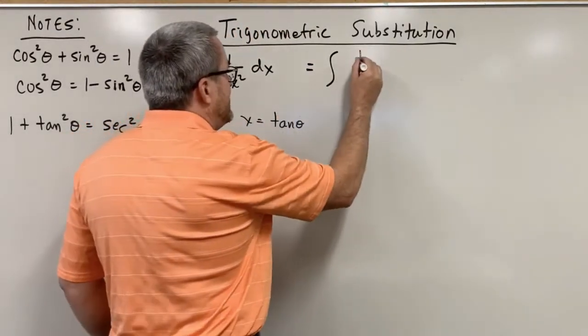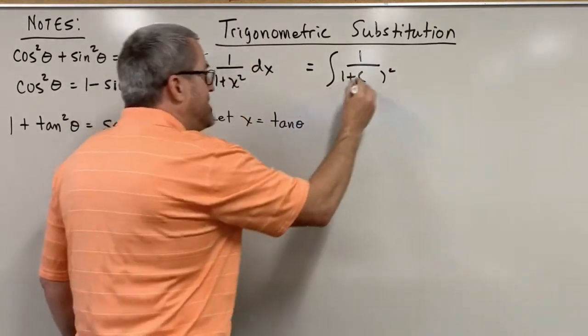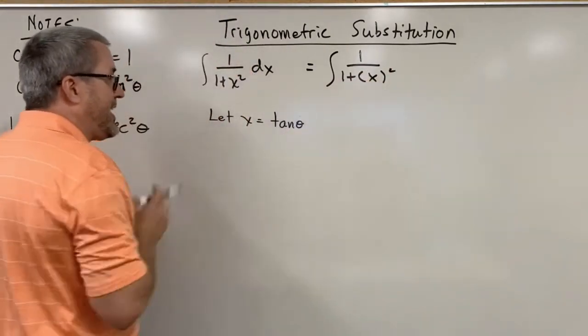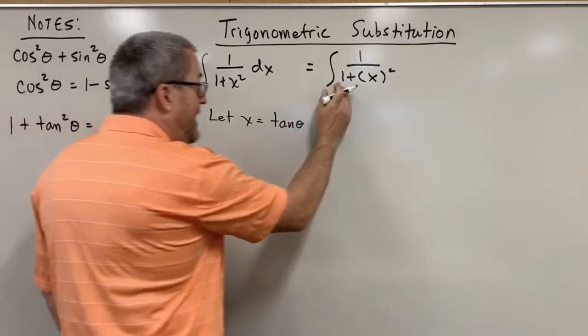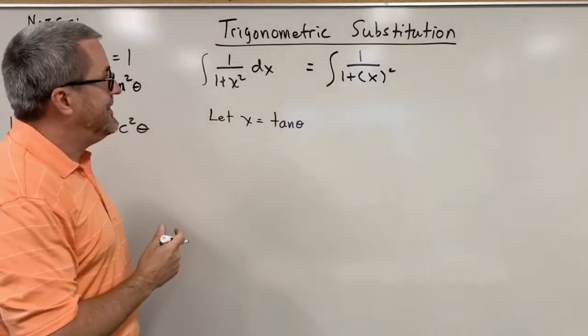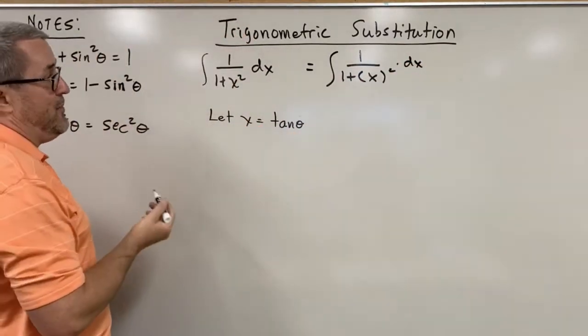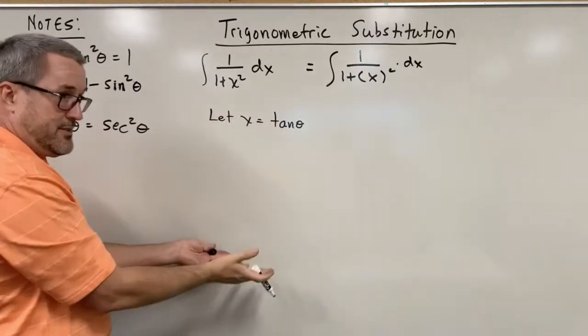So can you imagine this? 1 plus, instead of x squared, imagine replacing that x with tangent of theta. Then I would have 1 plus tangent of theta squared, which is the same as secant squared. Now that is going to get multiplied by dx, so we will need to figure out what dx is. Let's find out.